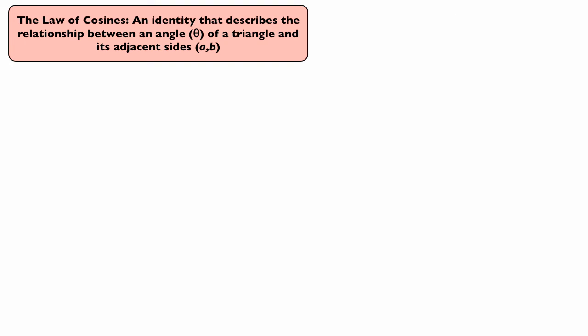In this video we're going to discuss and prove the law of cosines, which is a very useful formula, or identity, that describes the relationship between an angle theta of a triangle and its adjacent sides, which we'll call a and b.